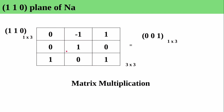Next is the (111) plane. I have prepared the transformation matrix for this one as well. The matrix is different from the previous one because this plane is (111) whereas that was (110). Here also the elongation is only along the z-axis.